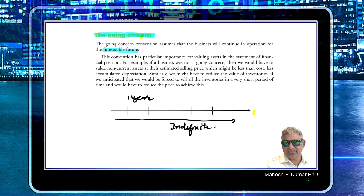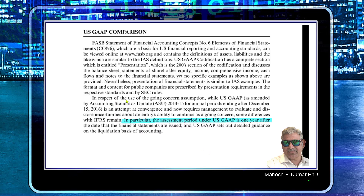If you are following International Financial Reporting Standards, you have one understanding of going concern. If you are a US public company following US GAAP, you have a different understanding. Upon research, I found that US GAAP is more specific: the assessment period is one year after the date that financial statements are issued, and US GAAP also sets out detailed guidelines on the liquidation basis of accounting.